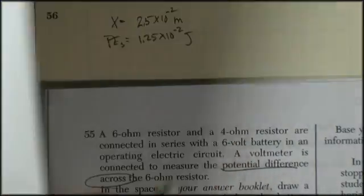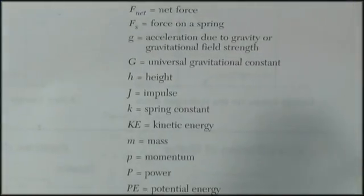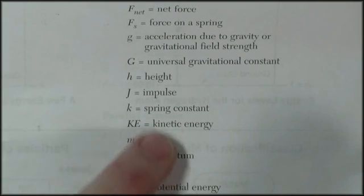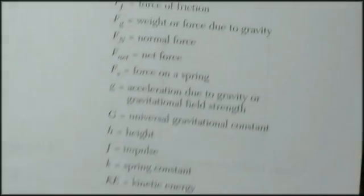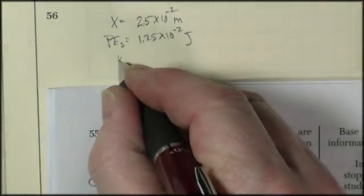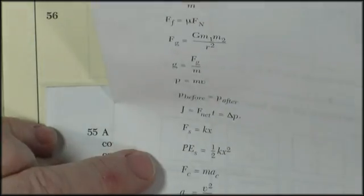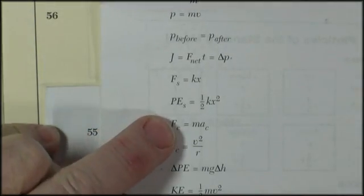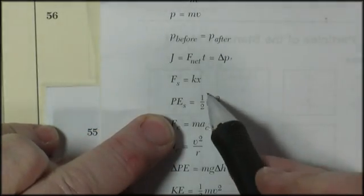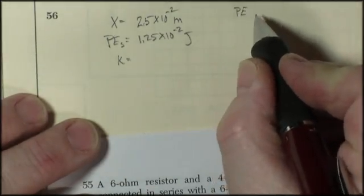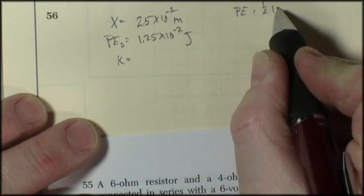Again, if I forget, I can just go look and just search through, and spring constant, k, spring constant. There it is. I'm looking for k. So now I find me a formula that has potential energy of a spring, and it's 1/2 kx squared. So now I have to write my equation. Potential energy is equal to 1/2 kx squared.